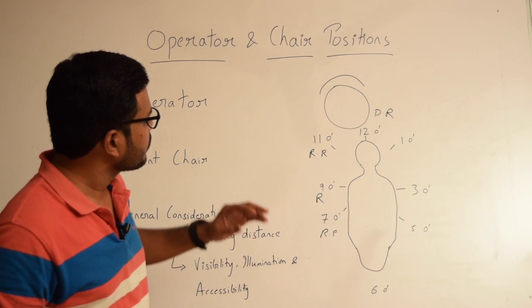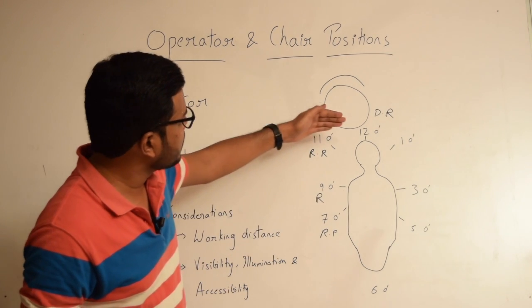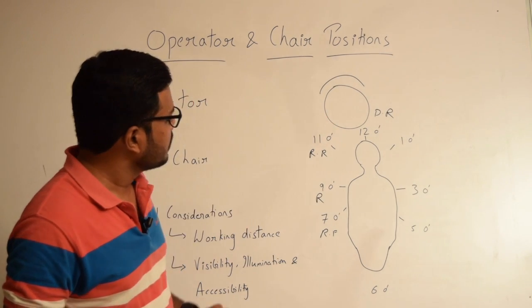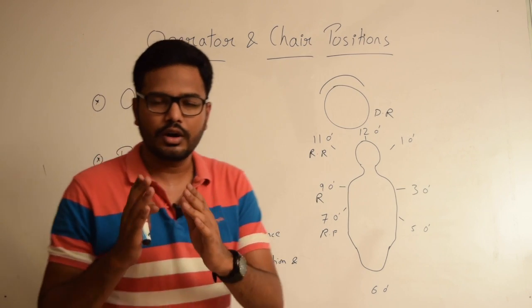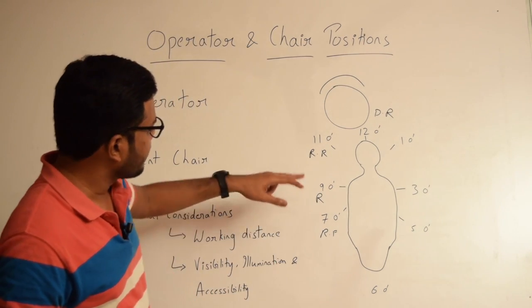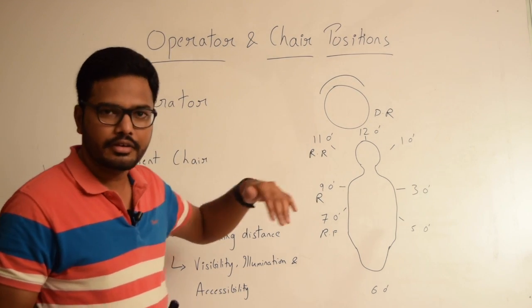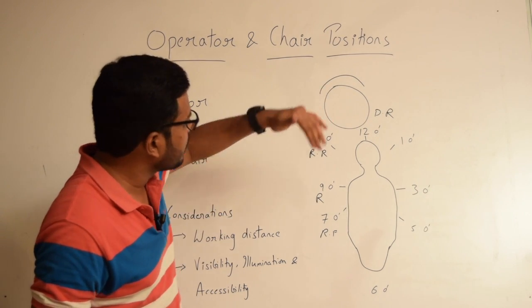For a right-handed operator we have these following chair positions: 7 o'clock also called right front, 9 o'clock right, 11 o'clock right rear, and 12 o'clock direct rear.